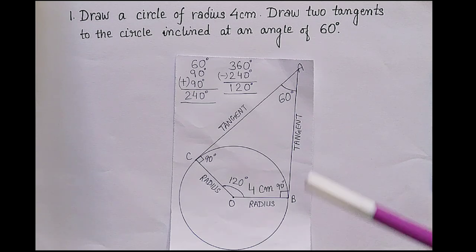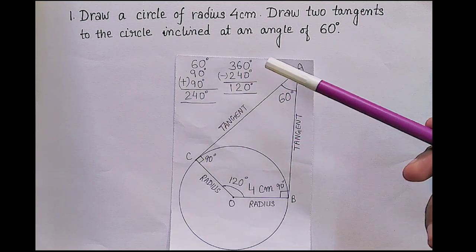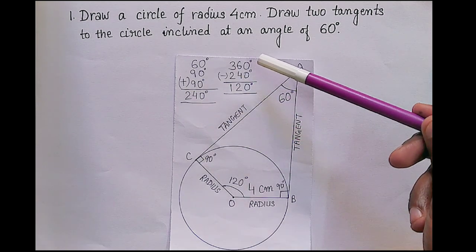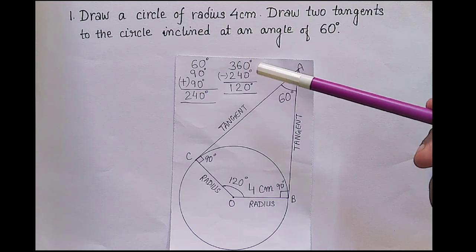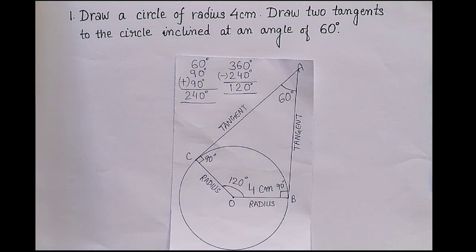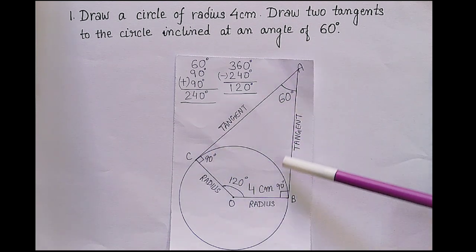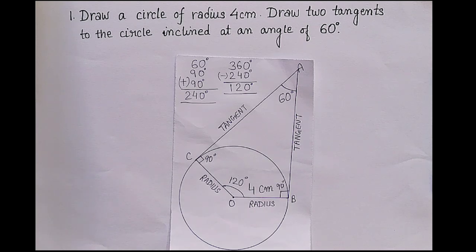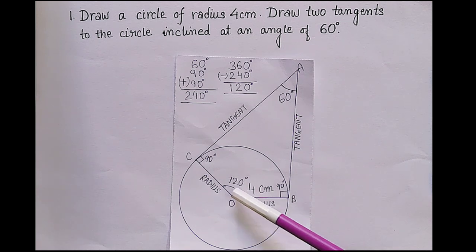Adding those gives 240, and subtracting 240 from 360 gives us 120 degrees. This is how we get the fourth angle, because the figure is a quadrilateral and in a quadrilateral the sum of angles is 360 degrees. So first we draw a circle of radius 4 centimeters, then we will draw this angle of 120 degrees.